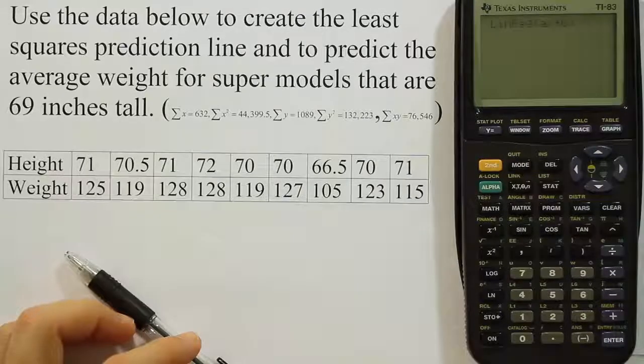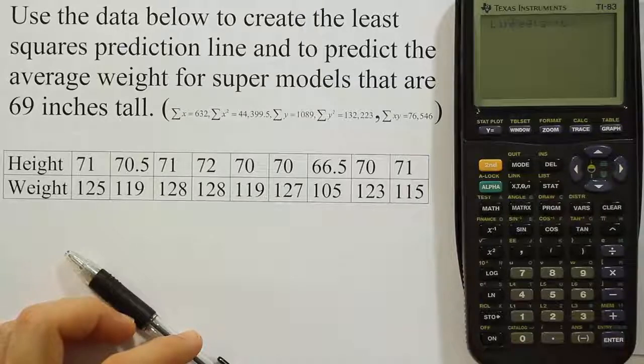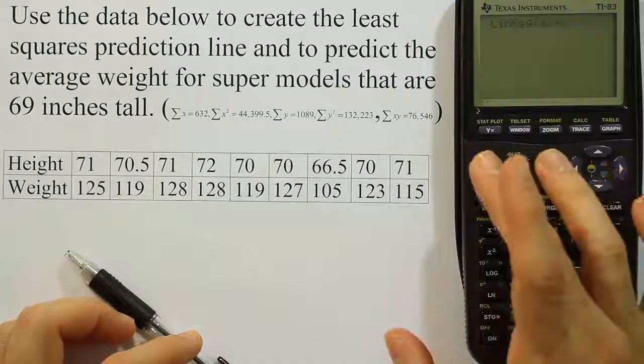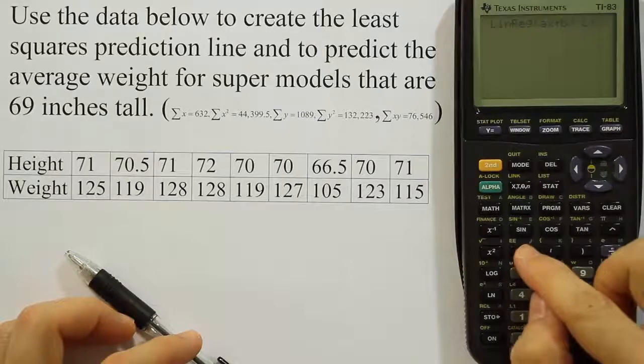I'm going to hit enter to take that option. The calculator is looking at me and blinking, so it wants a list number. It wants to know where did I put my data. So I'm going to tell it second and then number one, which is going to tell it L1. Then I'm going to press a comma here, the comma is above the 7 key.